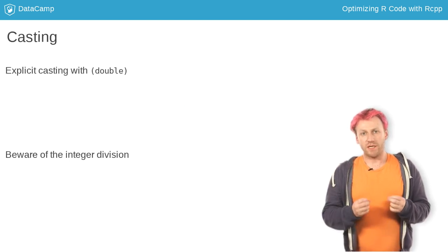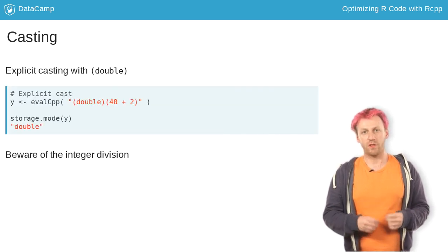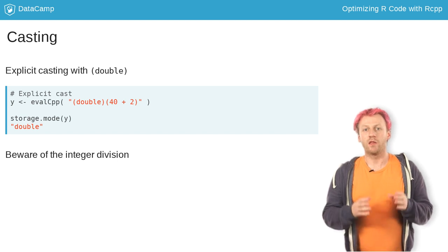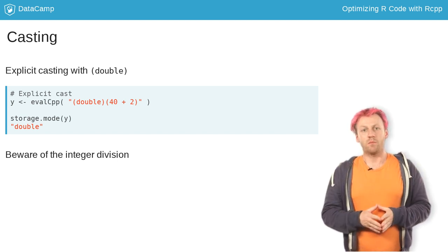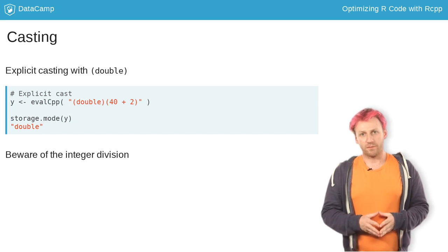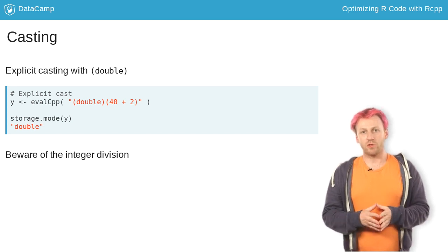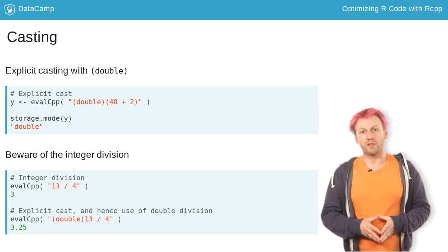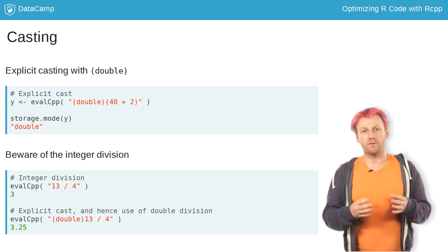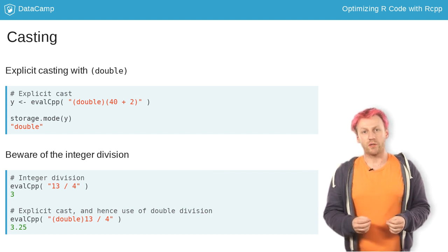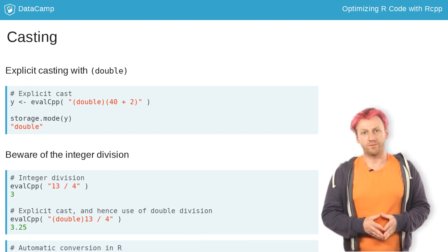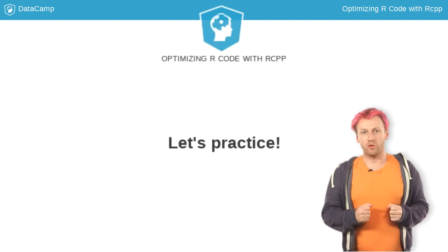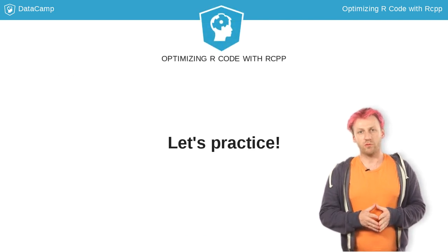To convert explicitly to a double, you can also use casting, with the syntax presented here — the name of the target type, here double, in parentheses before the object being cast. Casting to a double is sometimes necessary. For example, C++ uses integer division when both operands are int, whereas R promotes automatically to doubles when needed. Now it's your turn to write some basic C++ code.